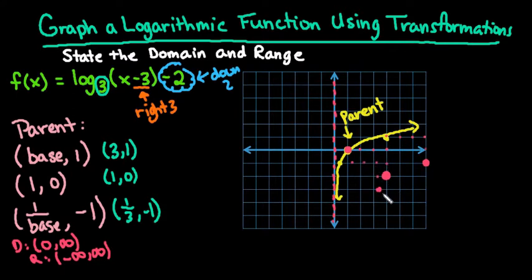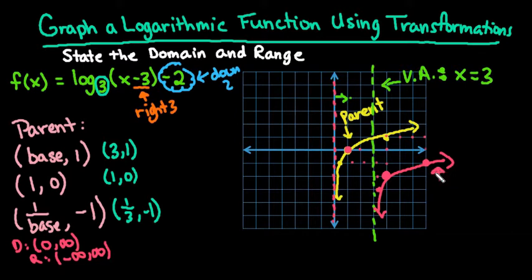Our asymptote also shifts. The asymptote shifts by however much the function shifted horizontally, so it shifts to the right 1, 2, 3. We have a vertical asymptote at the line x equals 3. This pink graph is the function we end up with after doing our transformations: log base 3 of (x minus 3) minus 2.